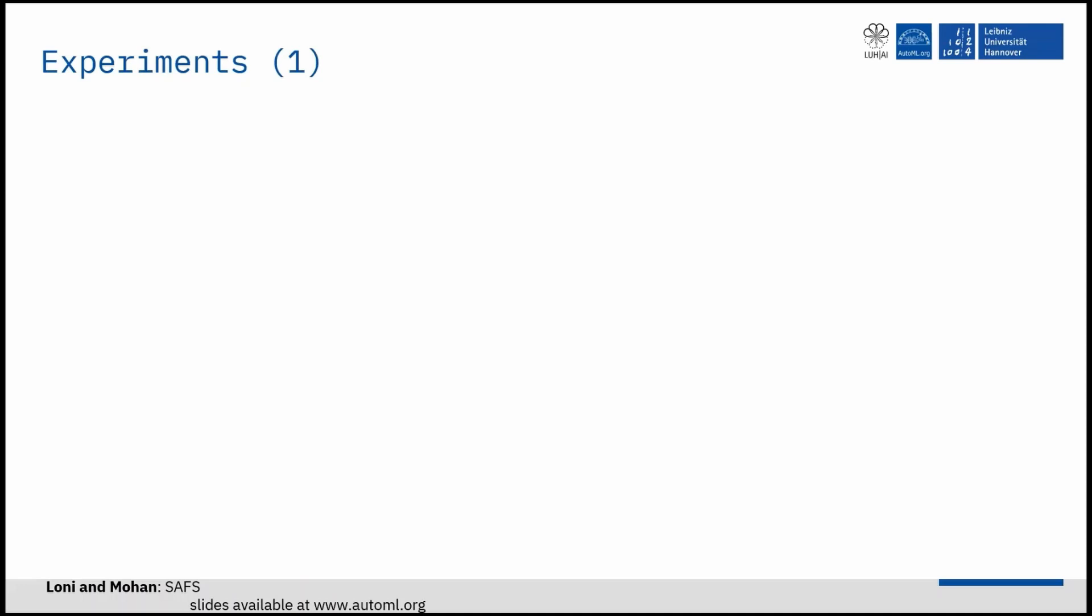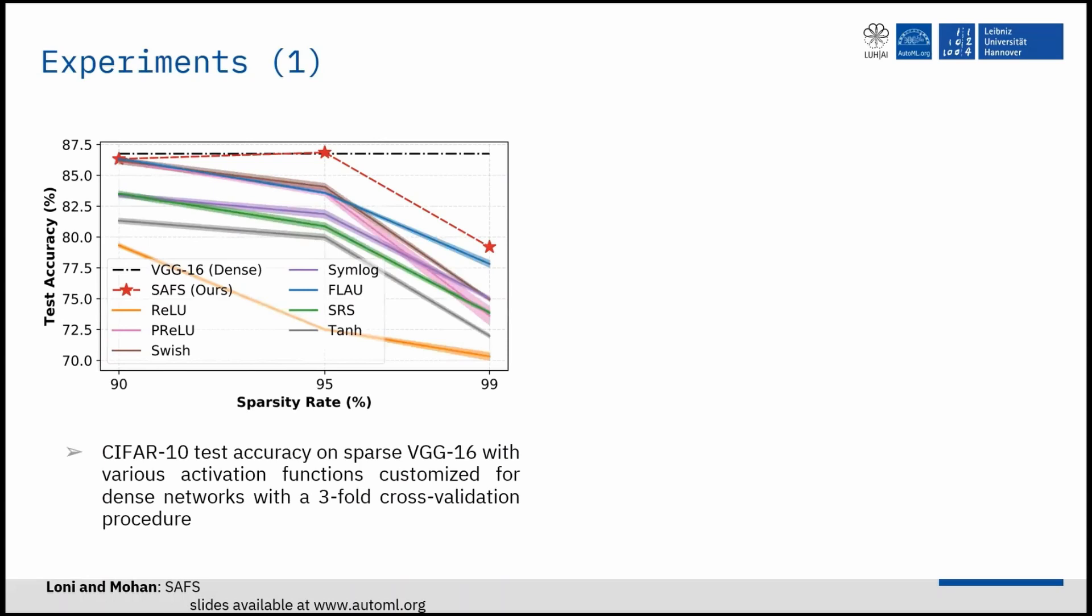To motivate the problem of tuning activation functions, we perform two sanity checks. First, we analyze the impact of seven different activation functions on the accuracy of sparse VGG-16 trained on CIFAR-10 dataset with different pruning ratios. Results show that ReLU does not perform the best in all scenarios. In addition, SAFS provides the best results in all scenarios.